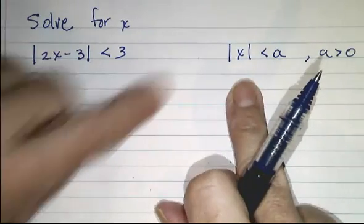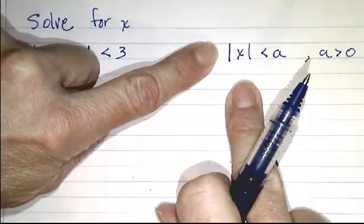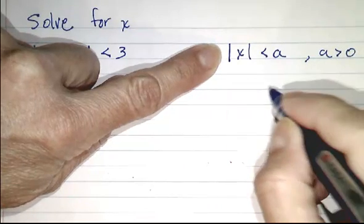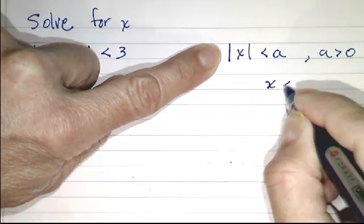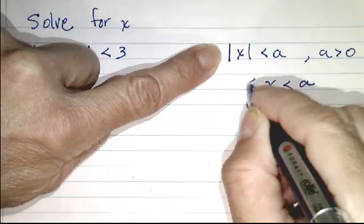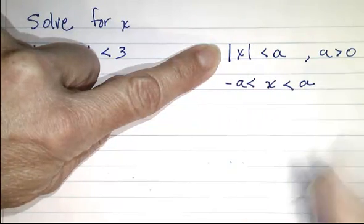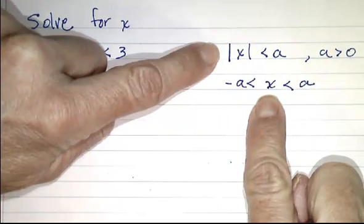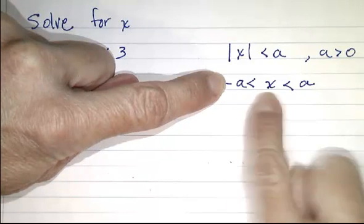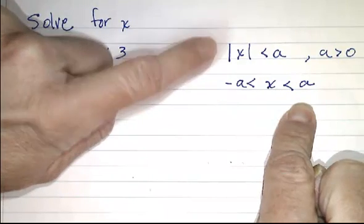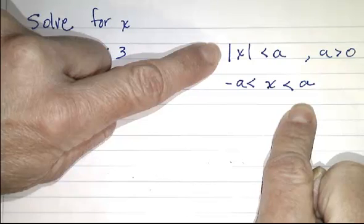The way we would translate an inequality of this form is that we would rewrite it first as x is less than a and x is bigger than negative a. So what we're saying here is all x's that satisfy this relationship are a solution to this inequality.